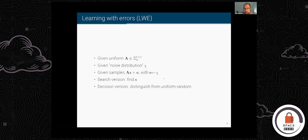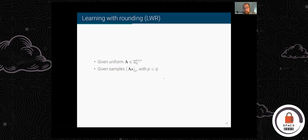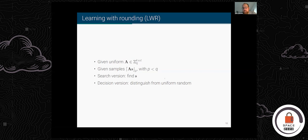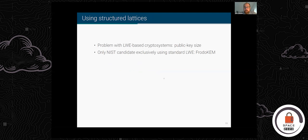There is also a variant called Learning With Rounding (LWR). In LWR, we again have a matrix with uniform entries modulo q and a secret vector s, we compute A·s, but instead of adding noise we drop the least significant bits — rounding to a smaller modulus p, where p < q. We're withholding some information from an attacker. Again we have the search version (find s) and the decision version (distinguish those samples from uniformly random).